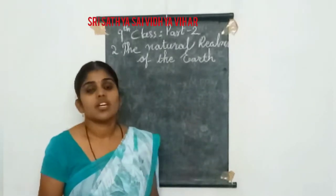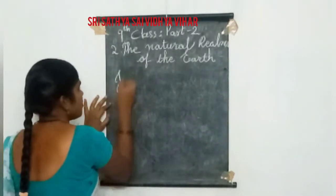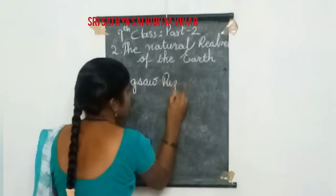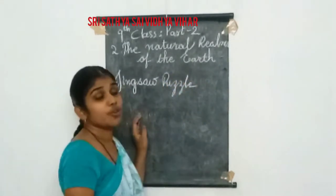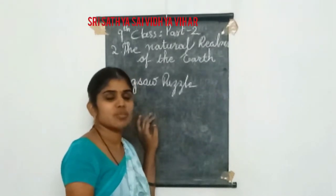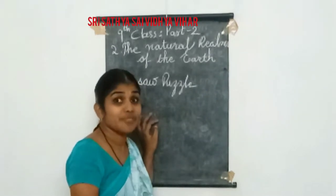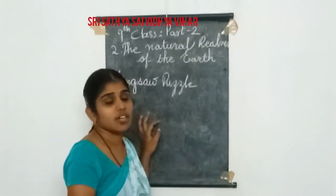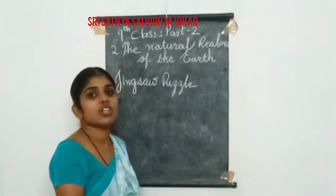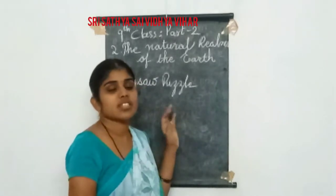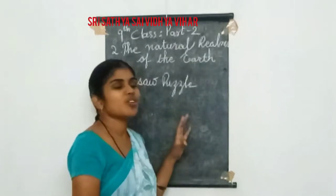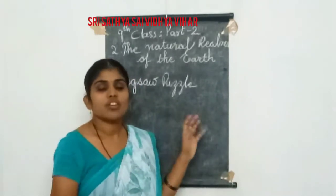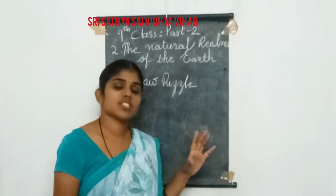In the last class we discussed the Jigsaw Puzzle. Jigsaw Puzzle means it is like a question, like confusion. The land is changing its shape and size according to the time, so this is like a puzzle. All scientists thought that the movement of the land and the changing of the land is like a puzzle, and this puzzle is named as Jigsaw. In the last class we discussed what the Jigsaw Puzzle is.